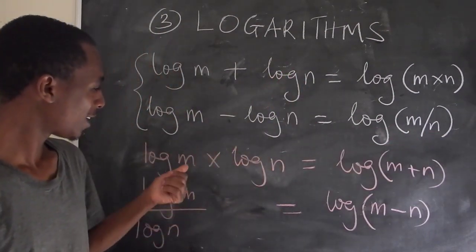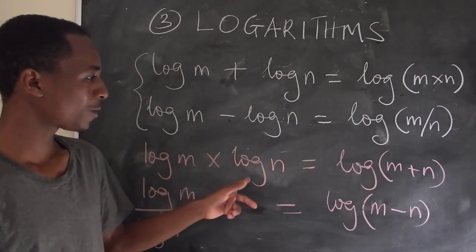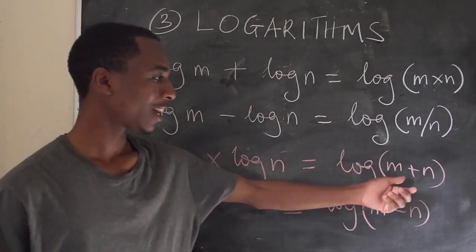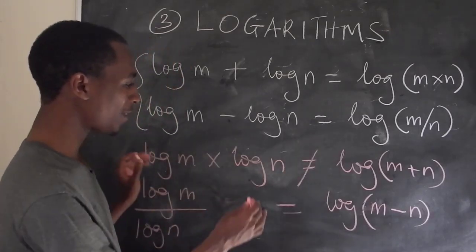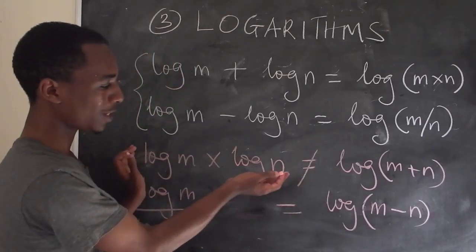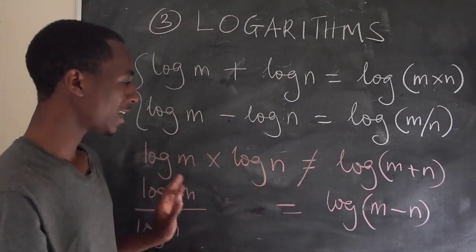sometimes we tend to think that if I have a multiplication of two logarithms, I'll have this: the addition of the numbers. But that's totally not true. And this does not exist. In fact, there is no law of logarithms that can simplify this.